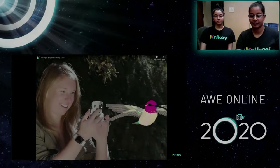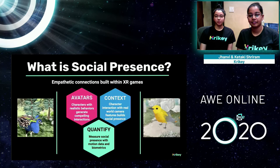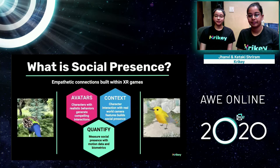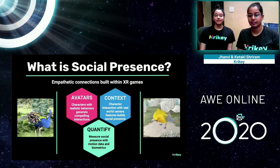A little bit about social presence and why this is relevant to building mobile AR games. First, avatars — when you build characters that have realistic behaviors, this can generate compelling social interactions for users and enhance gameplay. Second, context — using new tools like MARS, we can build realistic character interaction with real-world camera features, allowing users to feel like the line between what is virtual and what is real has been blurred. Here at Crikey, we quantify these features by measuring social presence with motion data and biometrics.